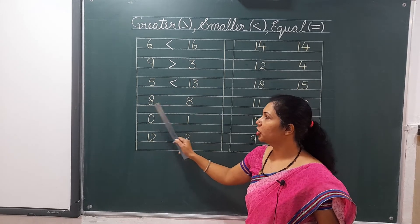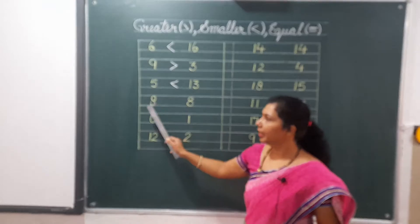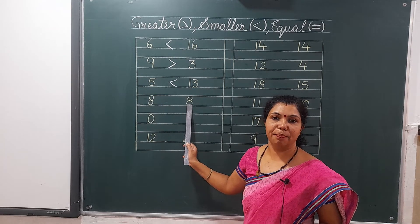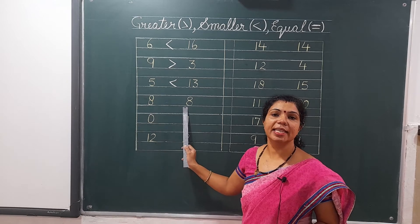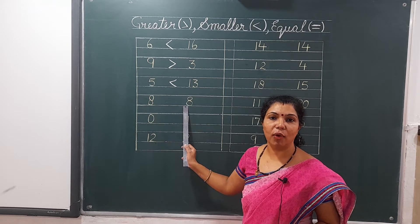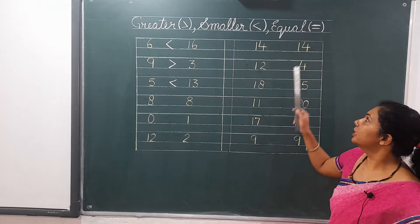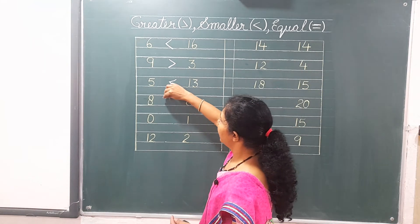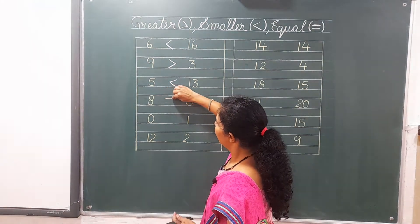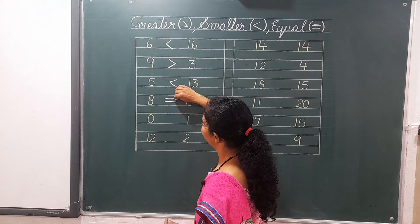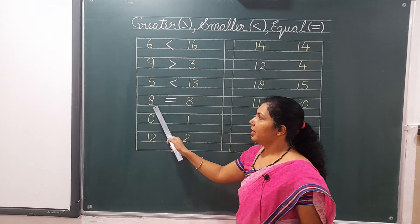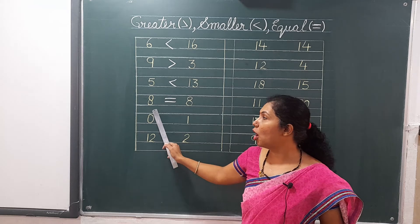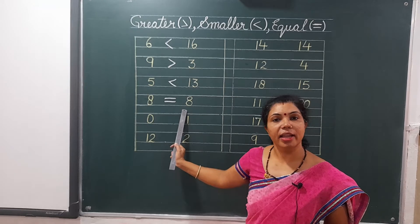Eight and eight. Both numbers are the same, equal. So we will put the equal sign here. Eight is equal to eight, because both numbers are equal.